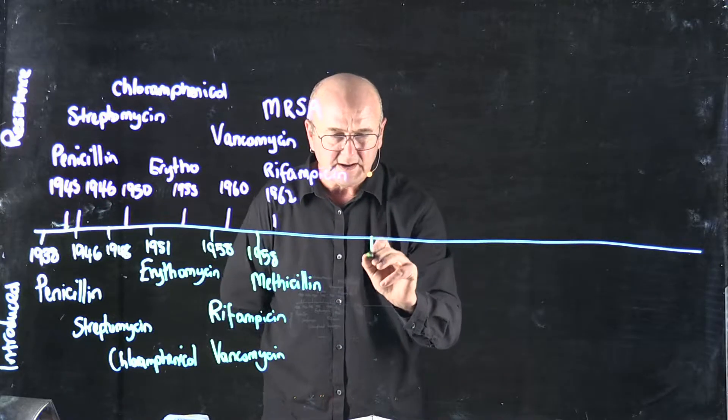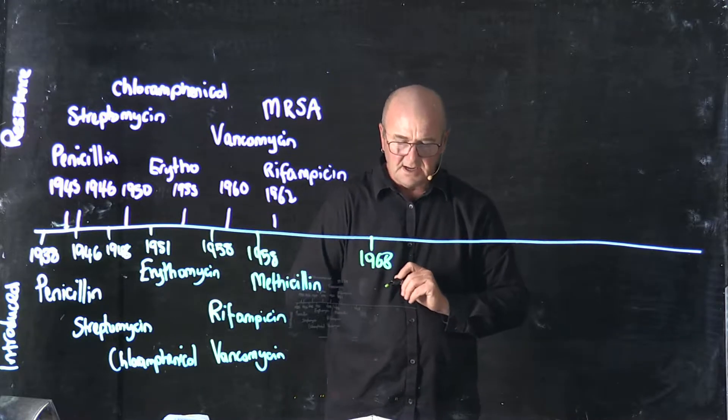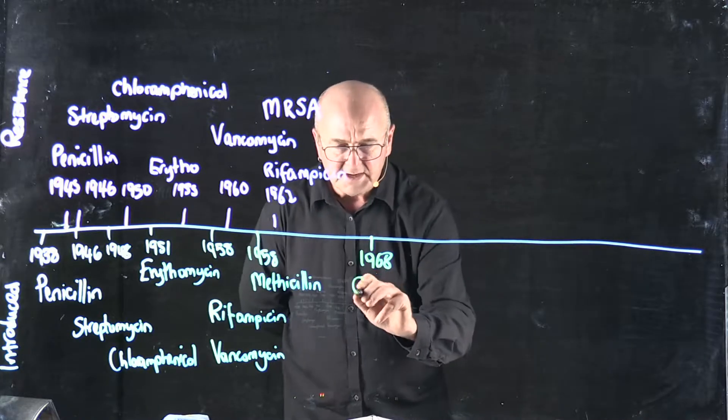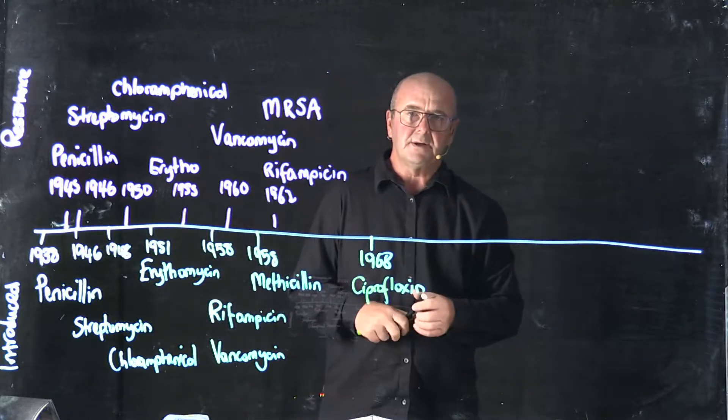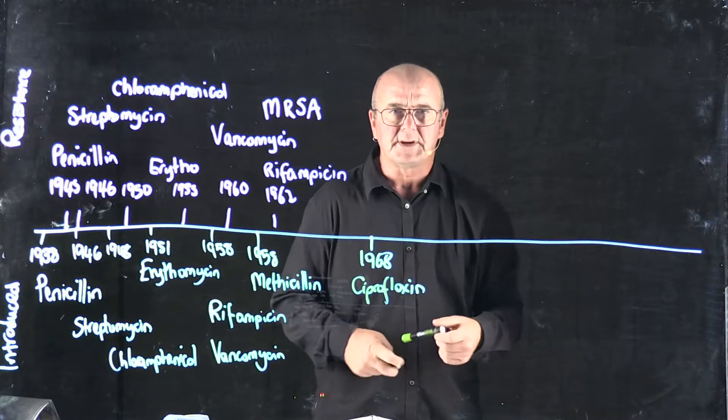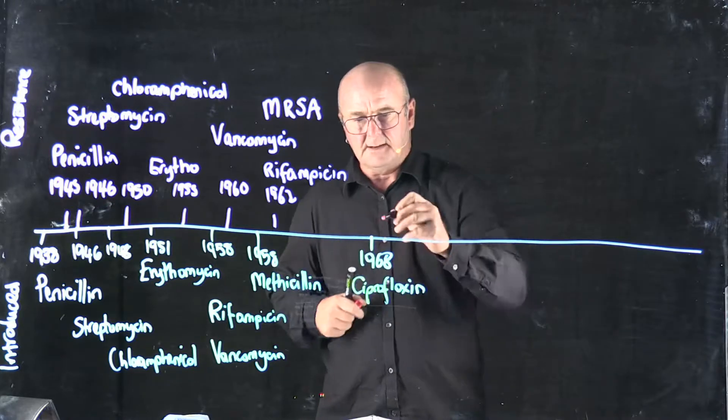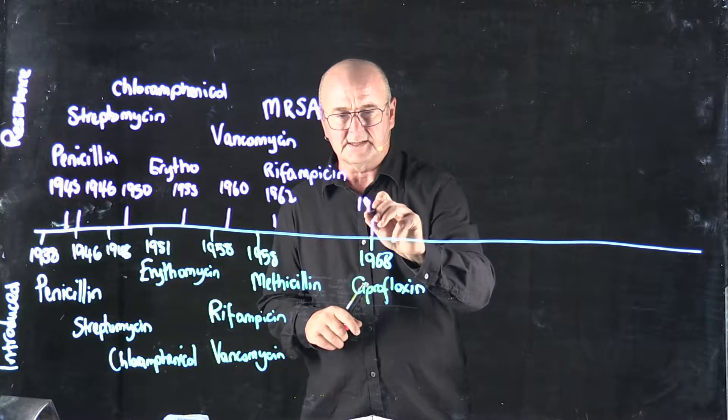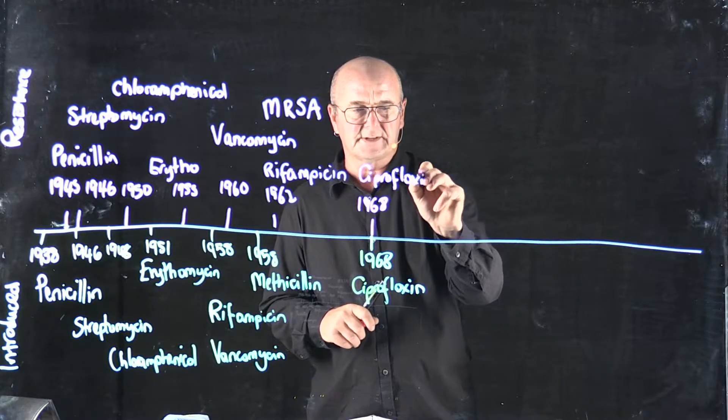So we had kind of the golden age of antibiotics, where we got a lot of antibiotics introduced. And then we had a bit of a gap before the next antibiotic introduced in 1968, when we introduced ciprofloxacin. This was a new kind of antibiotic called a quinolone. And people predicted that we would never get resistance to quinolones. It would be impossible. And so it wasn't until 1968 that we identified resistance to ciprofloxacin.